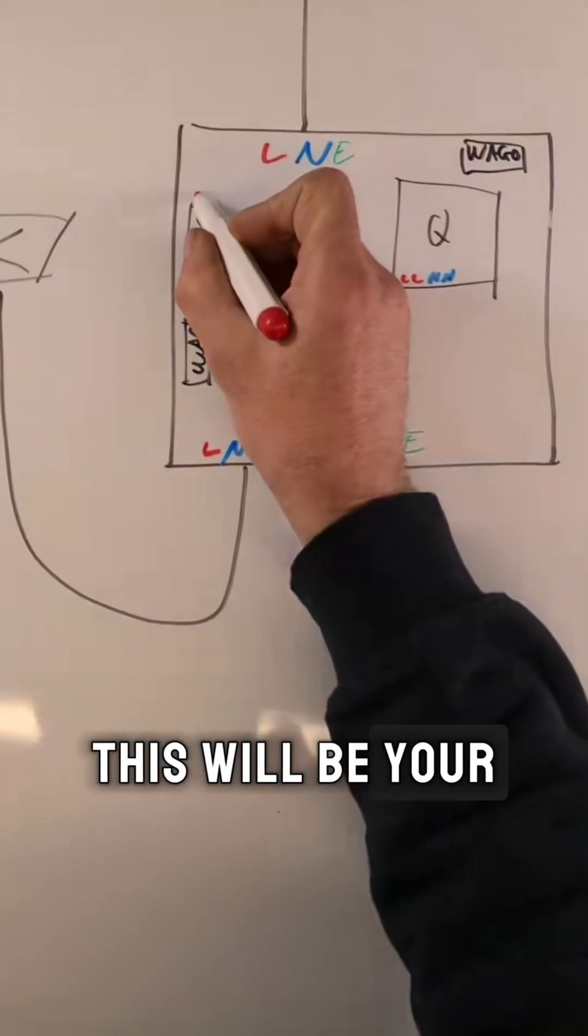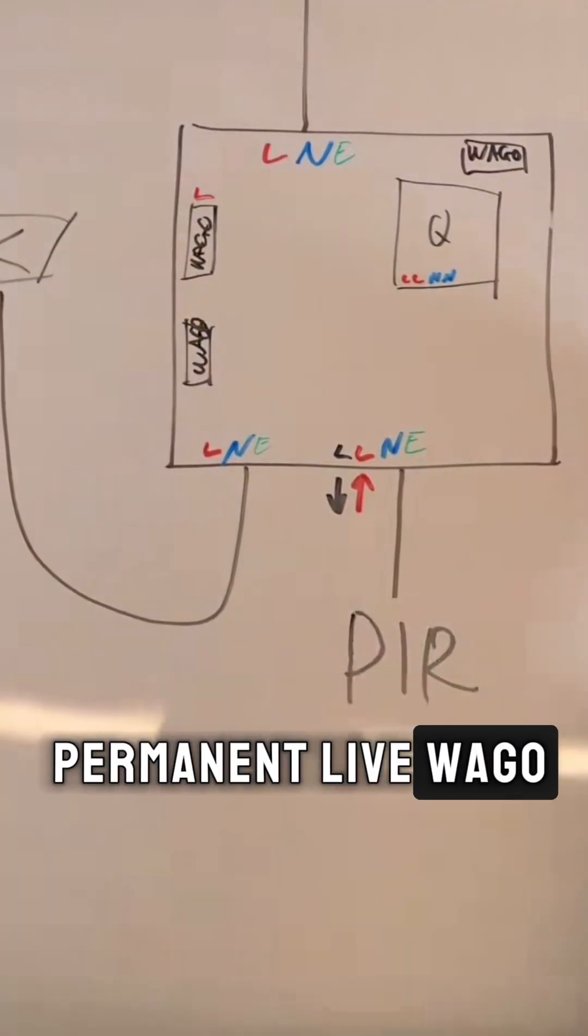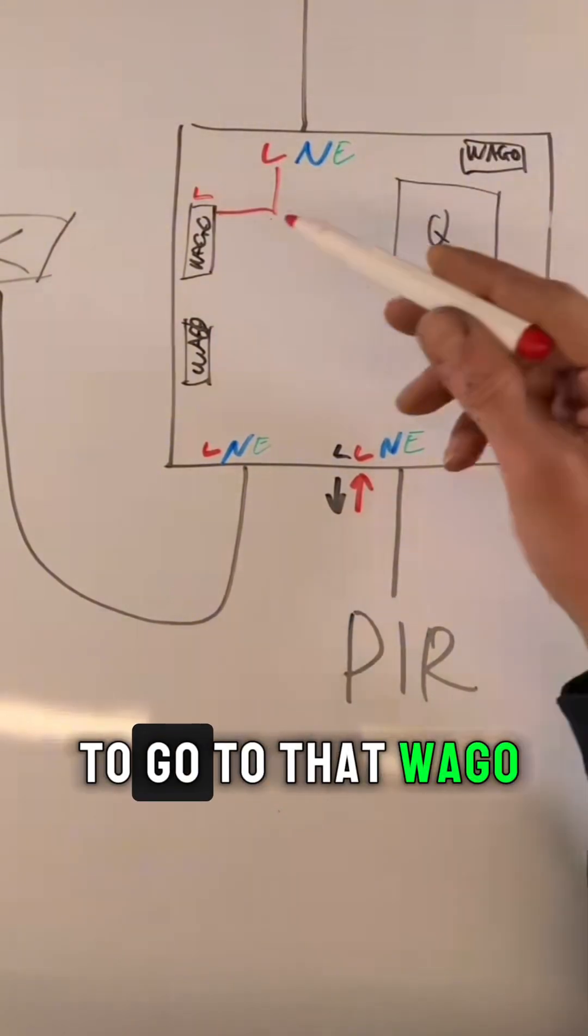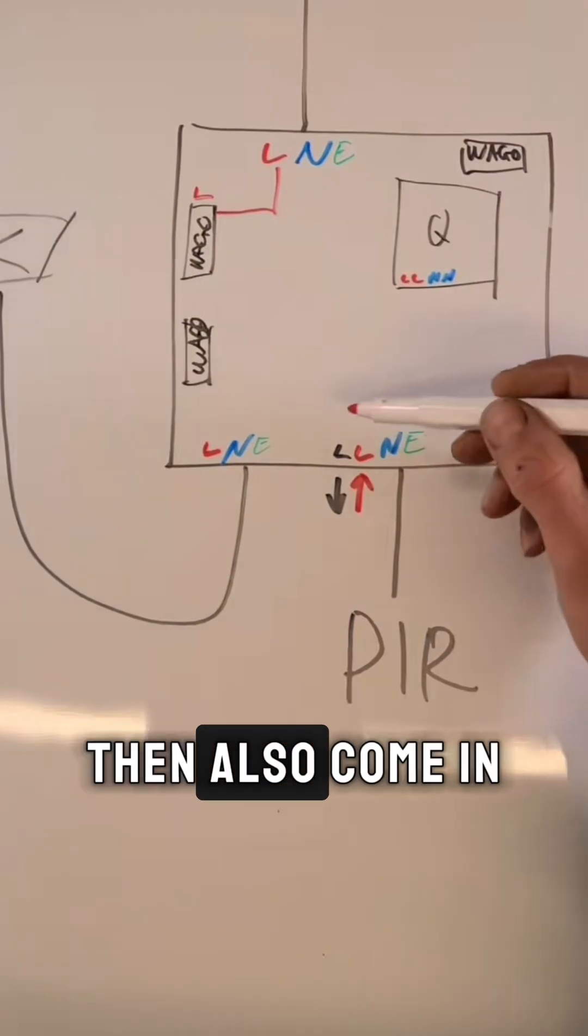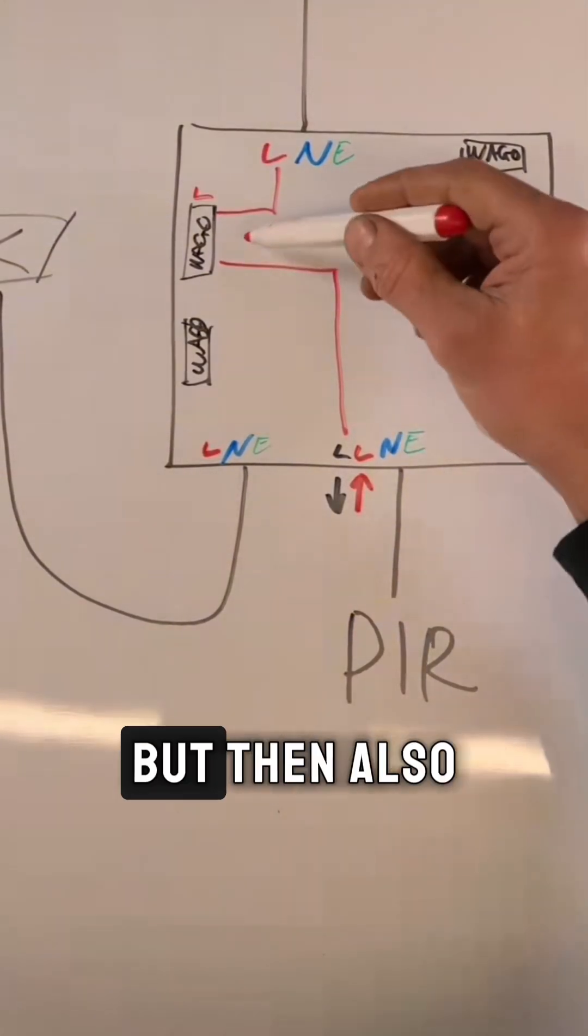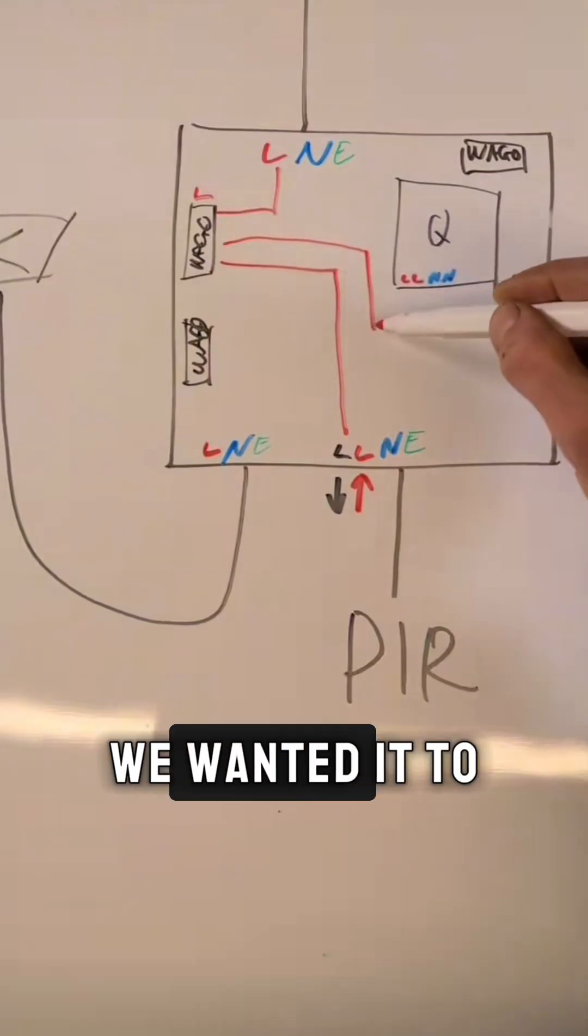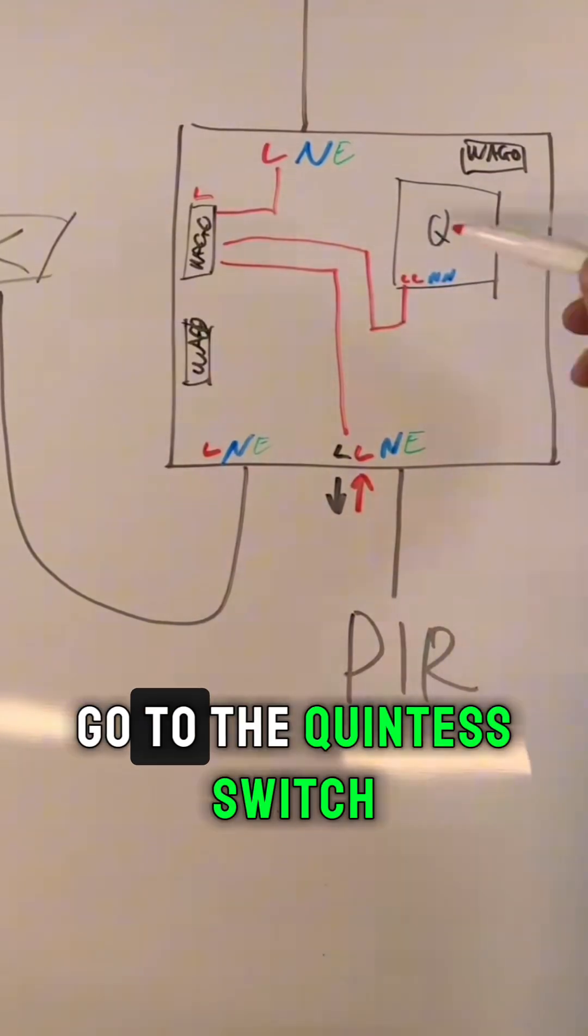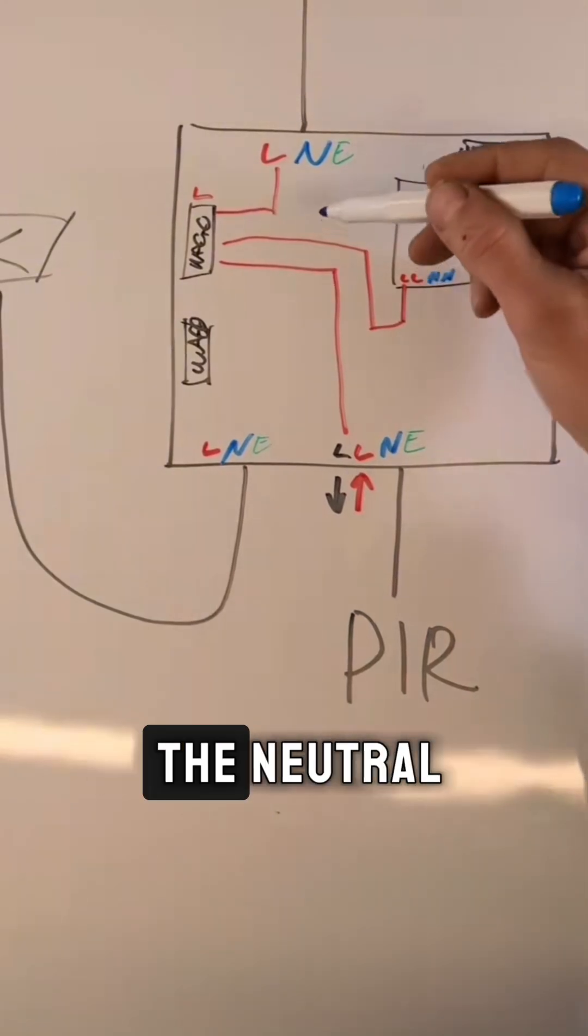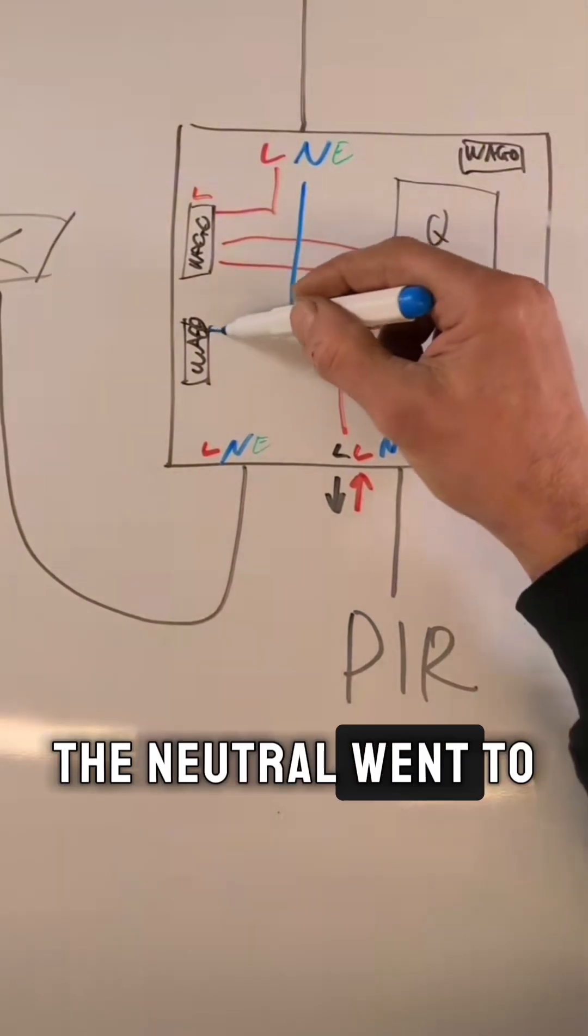So this will be your permanent live Wago. So what we wanted was a live coming in to go to that Wago, then also come in and go to the PIR, but then also we wanted it to go to the Quinetic switch where we want to do the same with the neutral.